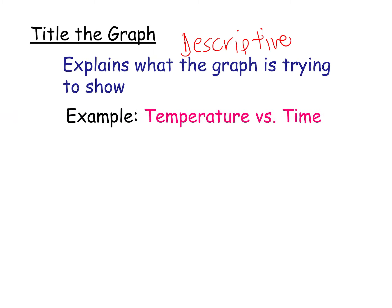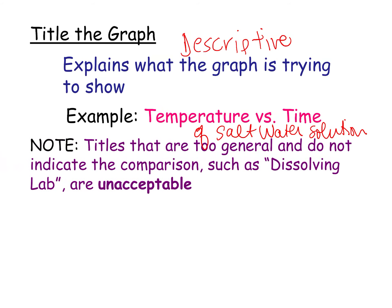This is always very important. Every year, students have problems with this. Titling the graph. It has to be descriptive. Temperature versus time. And actually, I want to keep going. Of a salt water solution. Because obviously, as the time goes on, temperature could increase or decrease, depending on what you're doing in the lab. You cannot have a very general title, because then you don't know what you're talking about. Dissolving lab. What does that mean?